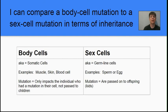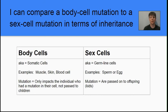Our next learning target is to compare a body cell mutation to a sex cell mutation in terms of inheritance. Body cells are also known as somatic cells — examples include muscle cells, skin cells, and blood cells. A mutation in a somatic cell will only affect the individual who has that mutation; they would not pass it on to their children. It is a very different story in sex cells, also known as germline or germ cells — examples in humans are sperm or egg cells. If there is a mutation in a germline cell, it will be passed on to offspring and will show up in all the cells of those offspring.